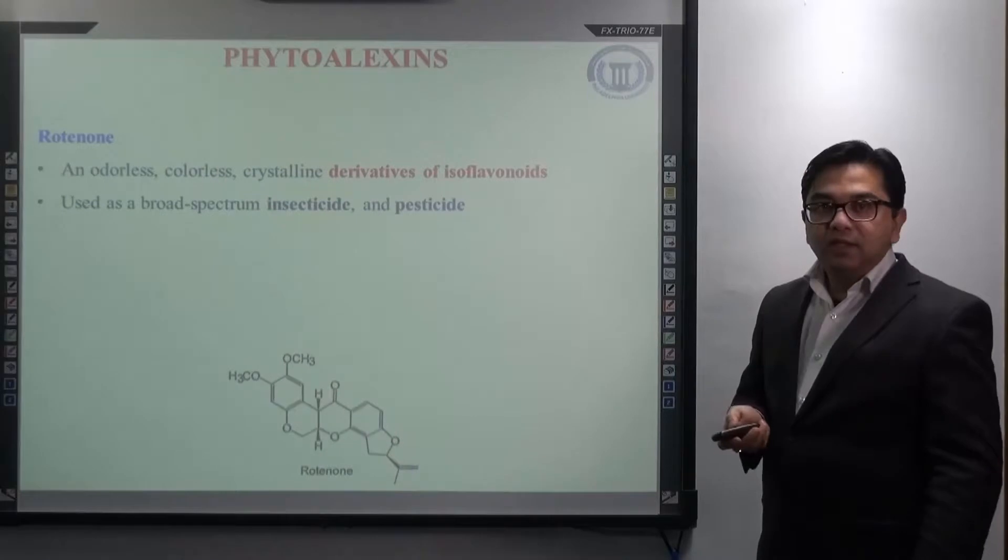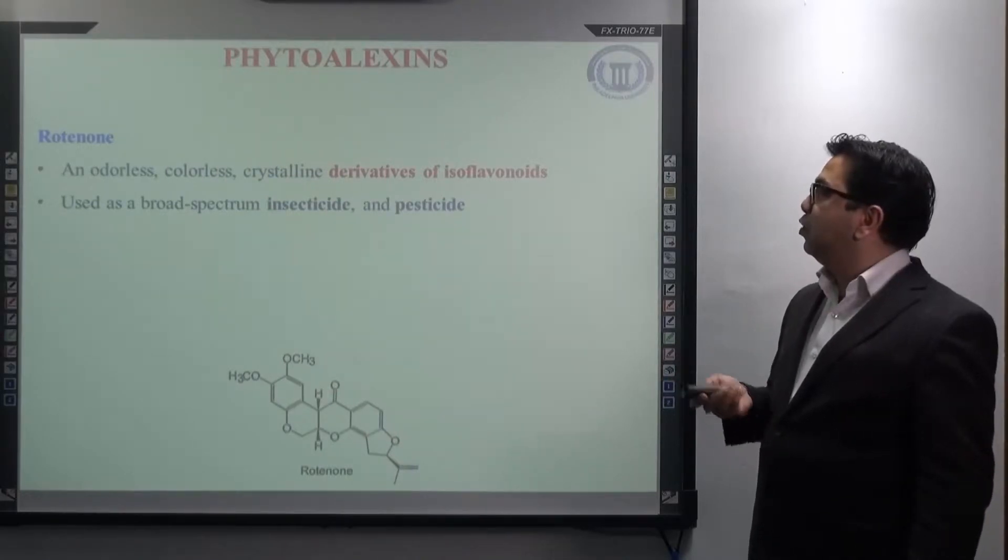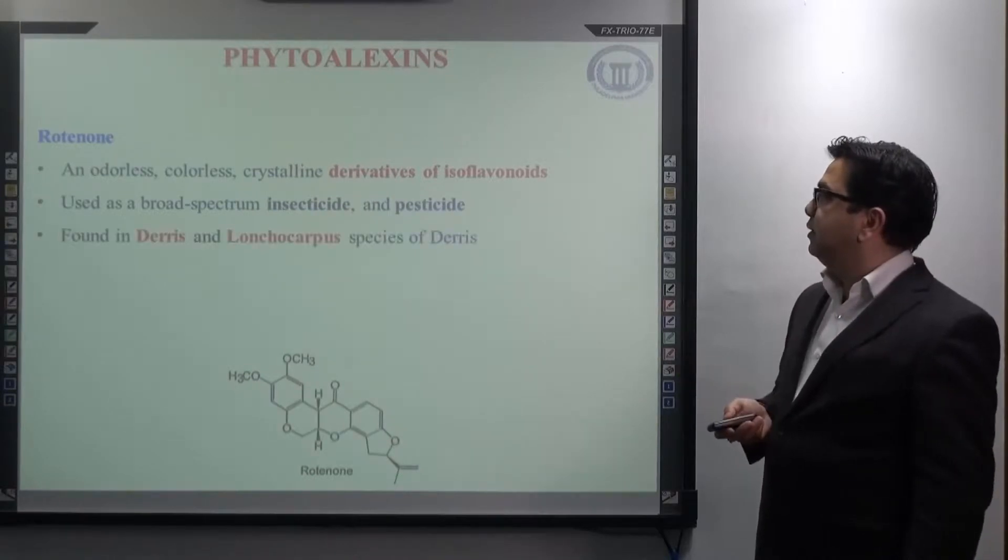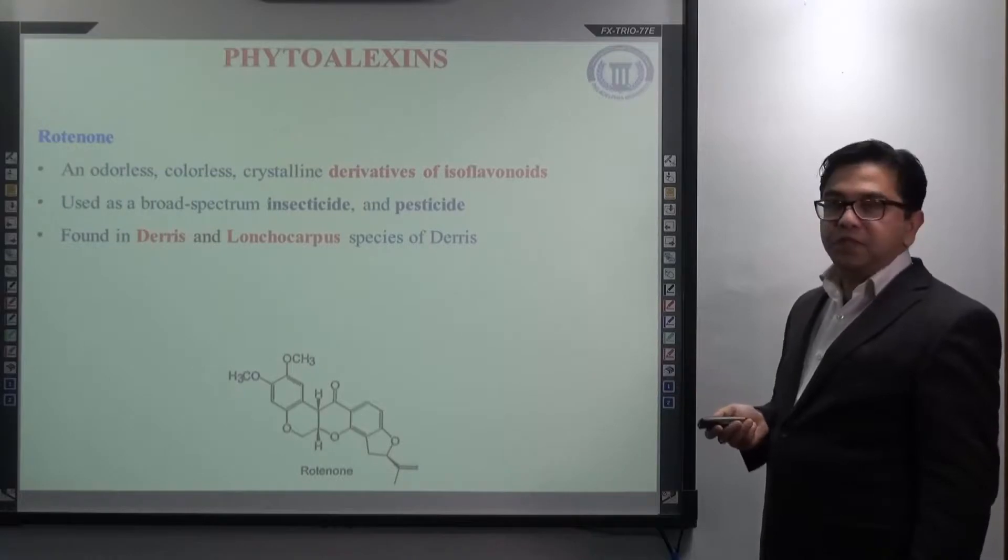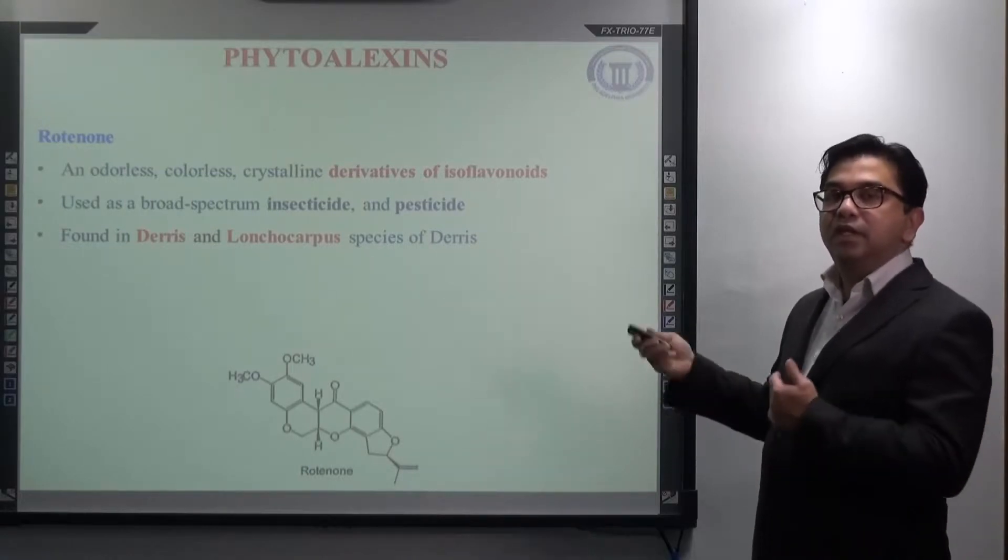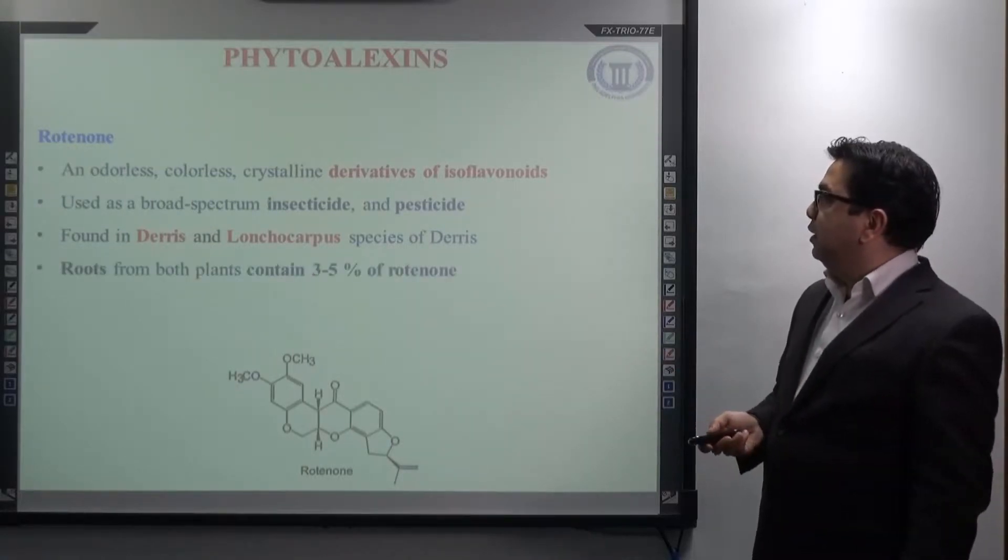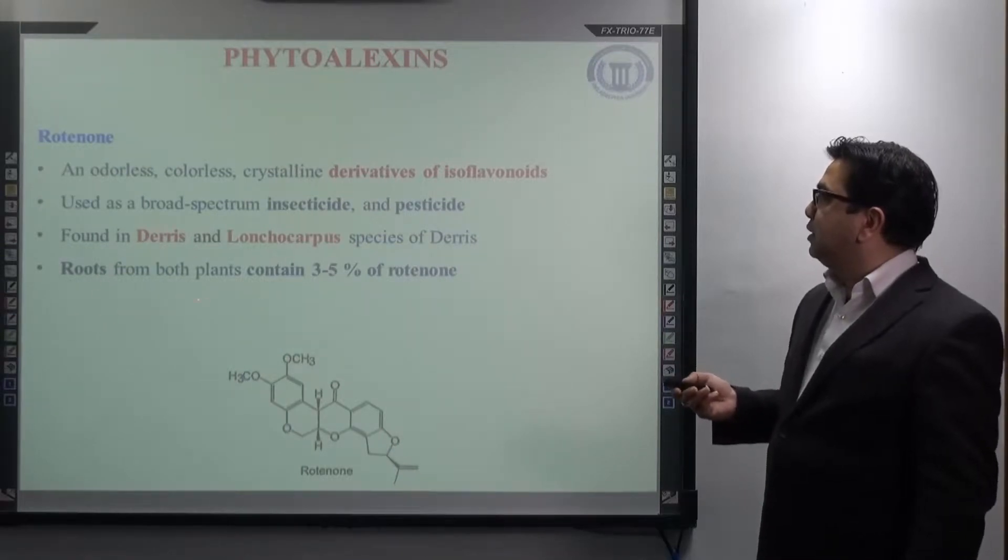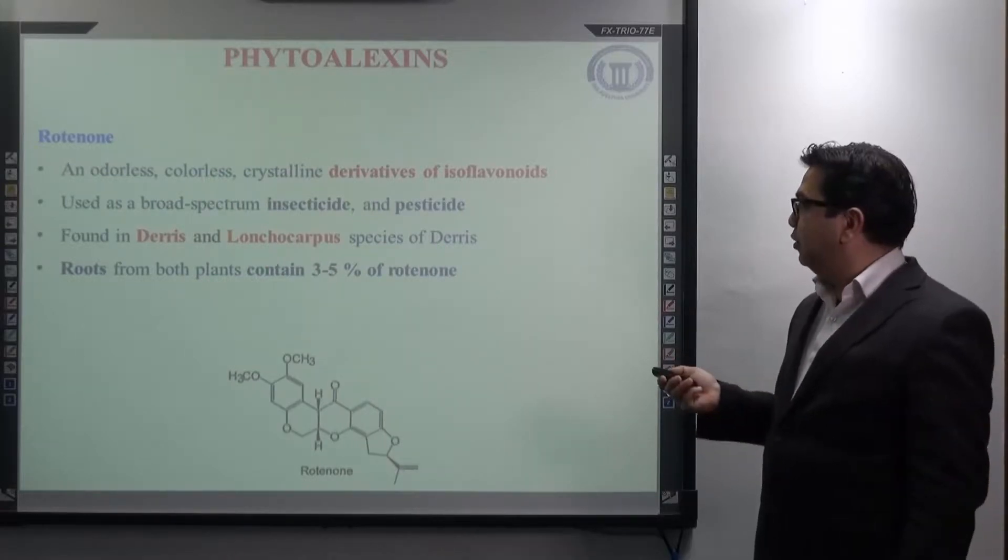This rotenone is used as a broad spectrum insecticide and pesticide. It is mainly found in Derris and Lonchocarpus, species of Derris. We will see the picture in the next slide. It is the root of this Derris and Lonchocarpus that contains around 3 to 5% of rotenone.